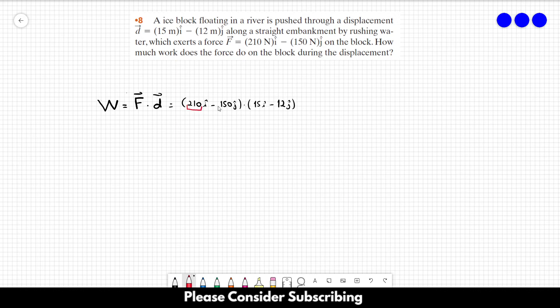The secret for doing a dot product is you just multiply the numbers that point in the same direction. For example, in this case, we have to multiply 210 by 15 and then sum this with negative 150 times negative 12. That's all we have to do. Just multiply and then sum everything.